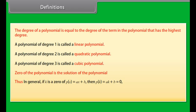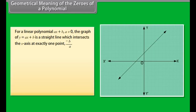In general, if k is a zero of p(x) = ax + b, then p(k) = ak + b = 0. That is, k = −b/a. So the zero of the linear polynomial ax + b is −b/a, which equals minus the constant term upon the coefficient of x.